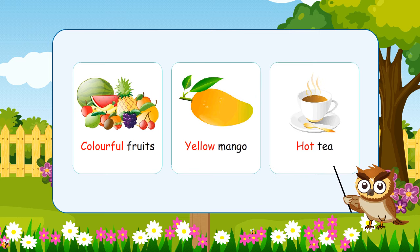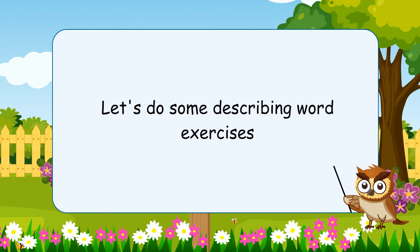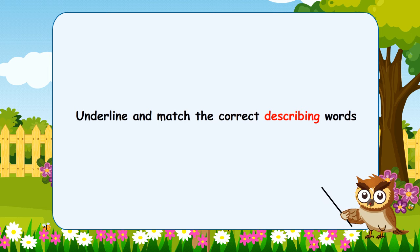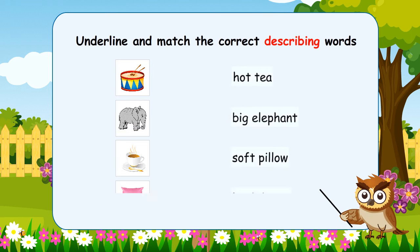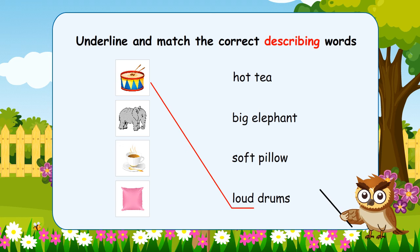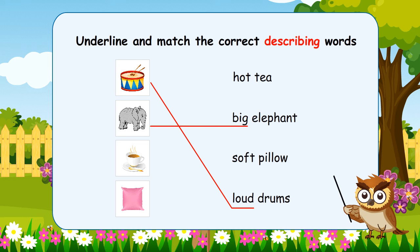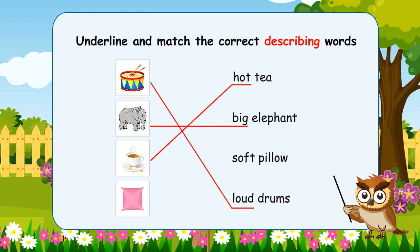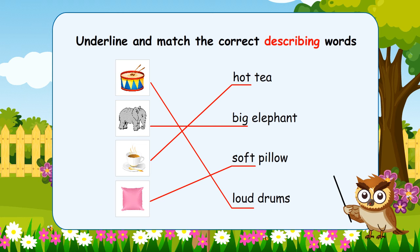Now let's do some describing word exercises. In the first exercise, we are going to underline and match the correct describing words. Loud Drums — the describing word is 'Loud.' Big Elephant — 'Big' is the describing word. Hot Tea — 'Hot' is the describing word. The last one: Soft Pillow — 'Soft.'